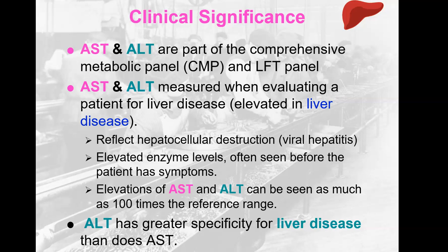ALT has greater specificity for liver disease than does AST. As noted earlier, AST can be elevated for muscle or heart causes. So if ALT is elevated, there's a greater chance that something is going on with the liver.